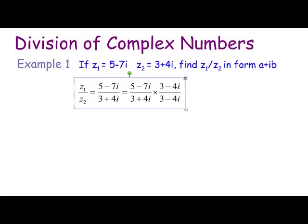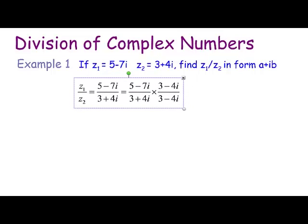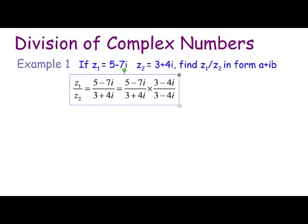All you do basically is you just rewrite the expression and multiply by the conjugate of the denominator. You can see here z₂ is 3 plus 4i and its conjugate is just 3 minus 4i, which is a reflection in the real axis.